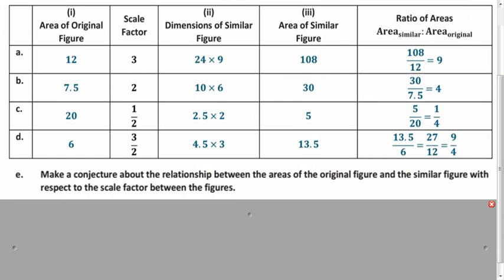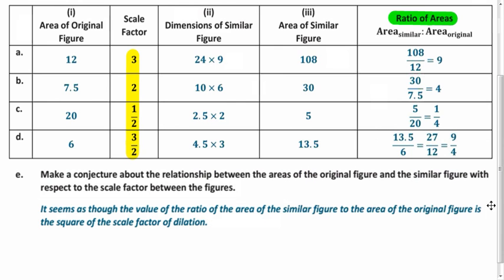What relationship do you see between the scale factors we have in this column and the ratio of areas that we calculated in this final column? What relationship do you see there? Well, hopefully you noticed that all of these numbers are the square of the scale factor we used. And that's not a coincidence.